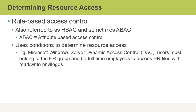Then there's rule-based access control, also referred to as RBAC, or sometimes ABAC — where the A stands for Attribute-Based Access Control. Basically, this means we are using conditions or rules that determine resource access. An example is the Microsoft Windows Server 2012-R2 Dynamic Access Control, or DAC. This means users might have to belong to a group such as HR, but at the same time they have to be full-time employees, and they might then get read-write privileges.